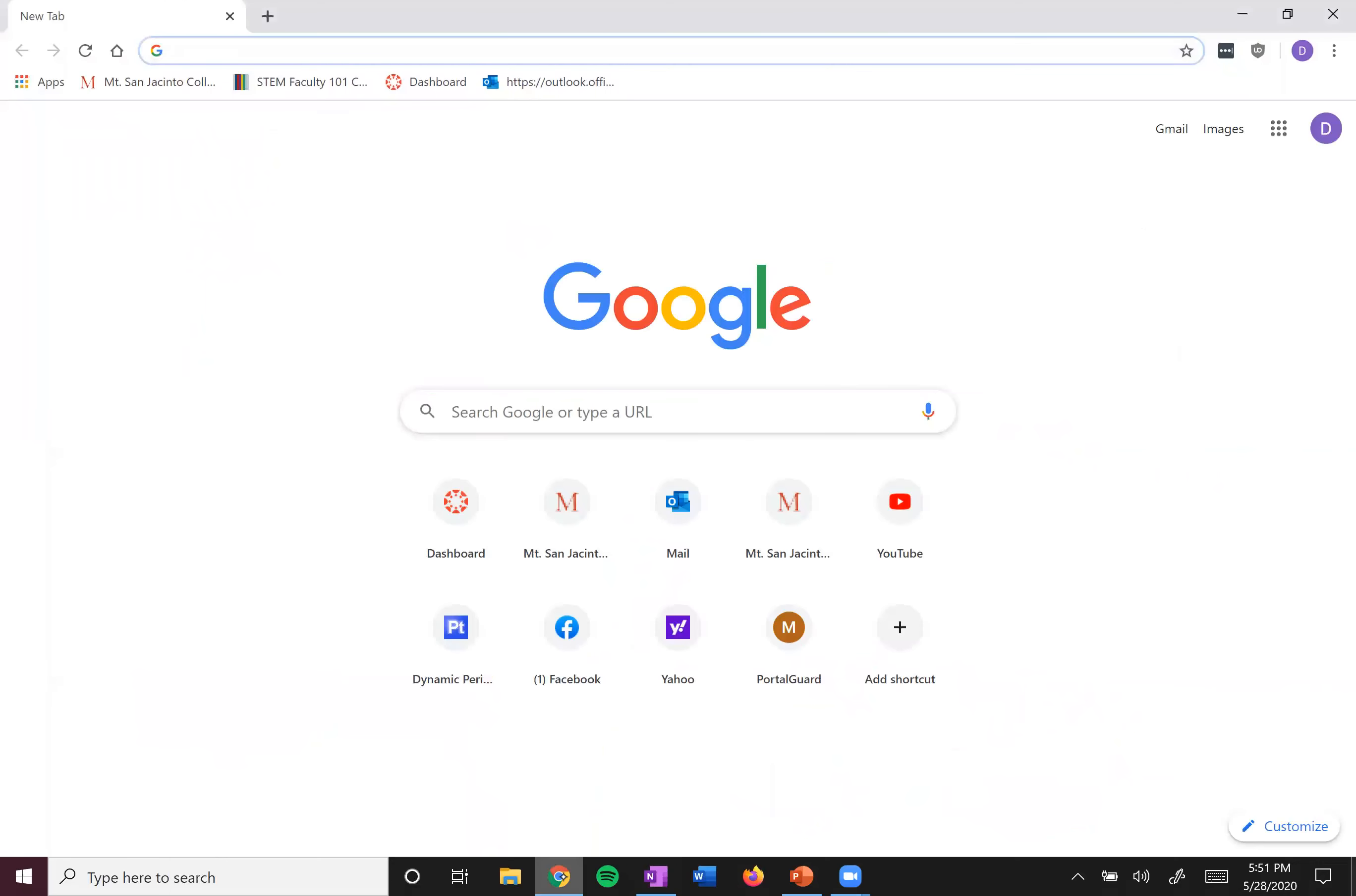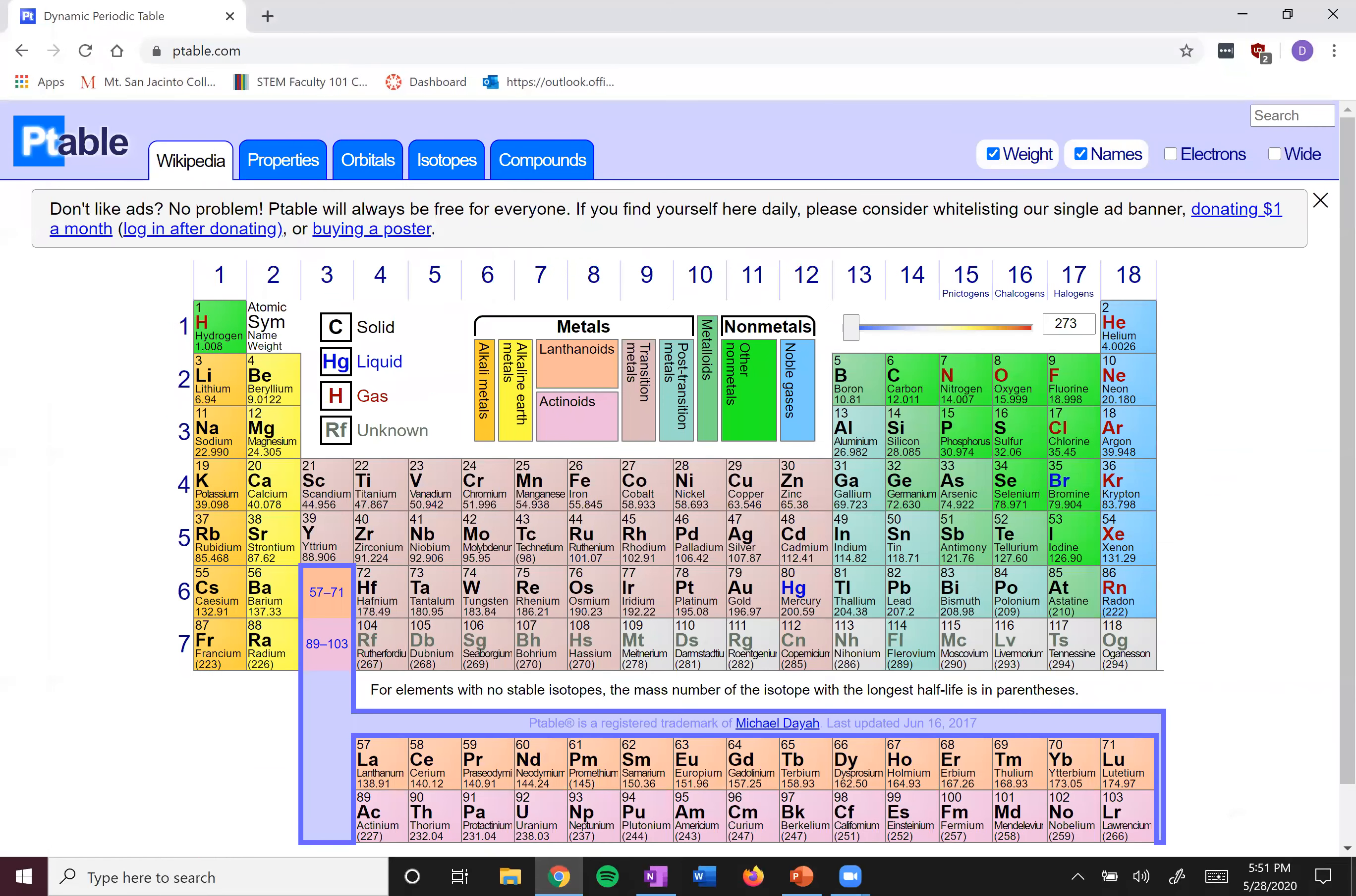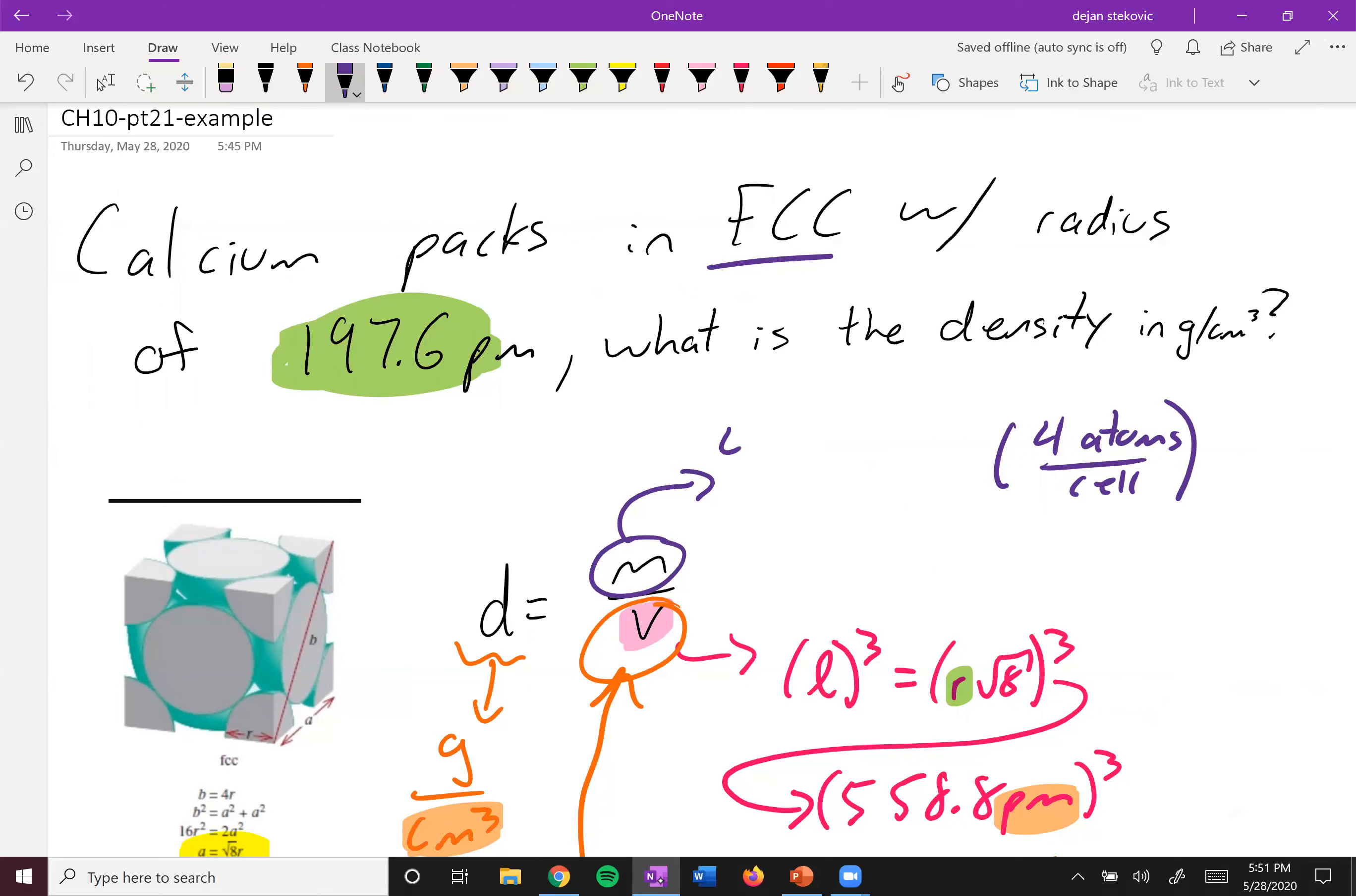And by taking a look at the periodic table, we know that calcium has a mass of 40.078 grams per mole.